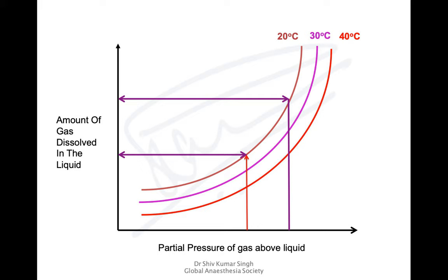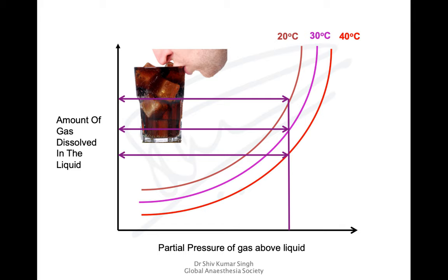The amount of gas which dissolves in the liquid phase or blood depends not only on the partial pressure, but also on temperature. At higher pressures, more gas is dissolved — so if partial pressure increases, the amount dissolved increases. But if temperature increases, the amount of dissolved gas at the same partial pressure is lower. That's why fizzy drinks are better when kept cold — cold fizzy drinks will have more dissolved carbon dioxide than a warm fizzy drink.